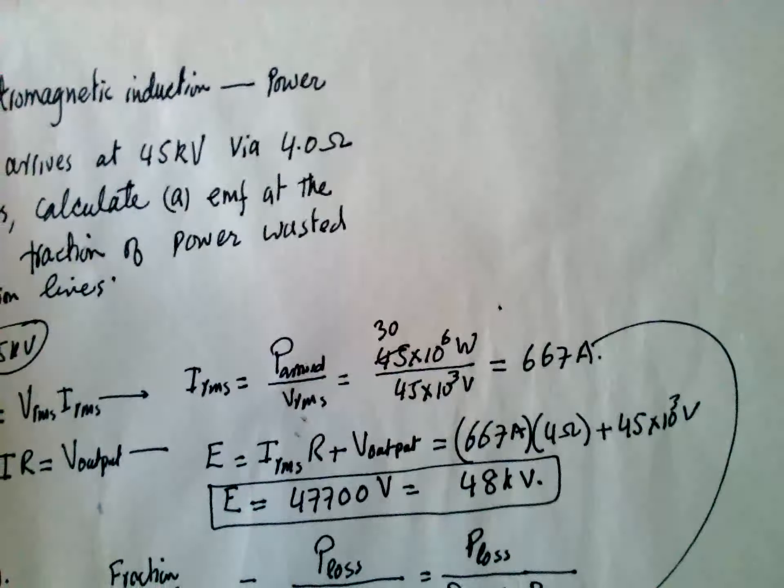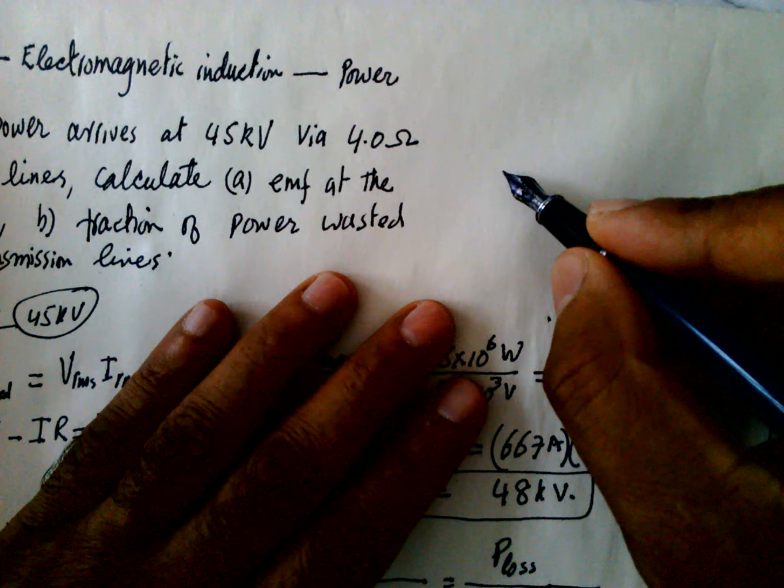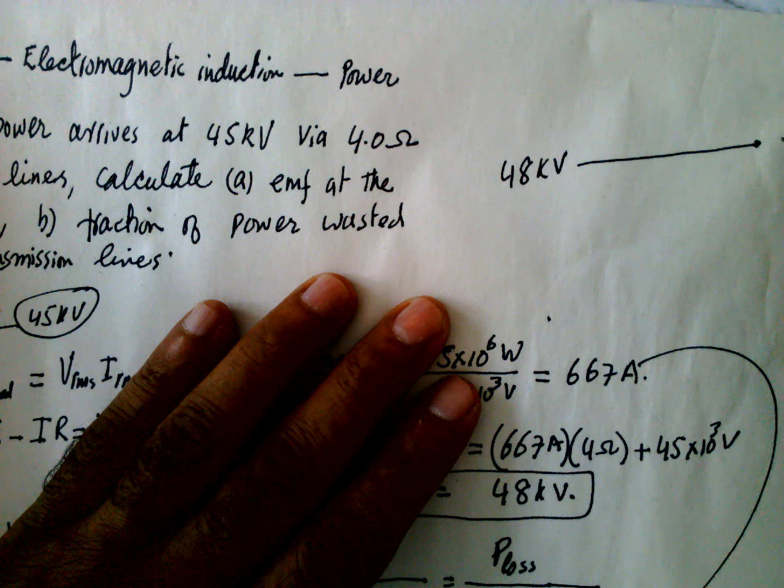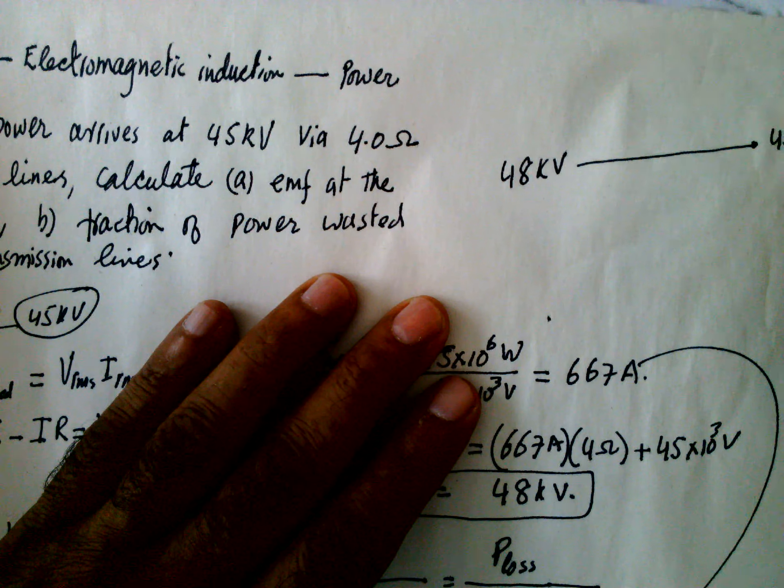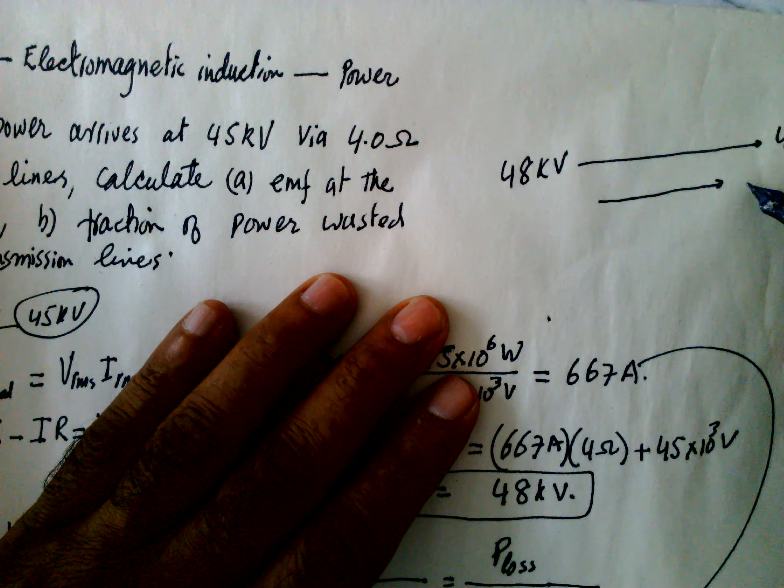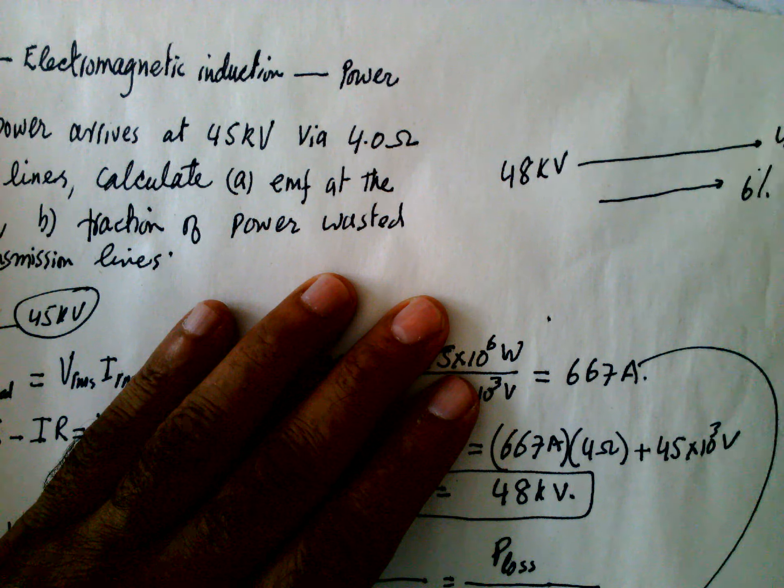So that is the answer. So briefly, 48 kilovolts is generated and 45 kilovolts arrives, and the transmission loss is about 6 percent.